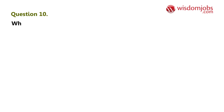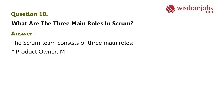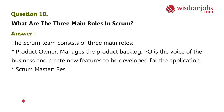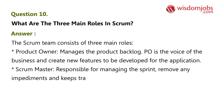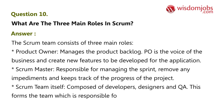Question 10: What are the three main roles in Scrum? Answer: The scrum team consists of three main roles: the Product Owner, who manages the product backlog and is the voice of the business, creating new features to be developed; the Scrum Master, who is responsible for managing the sprint, removing impediments, and tracking progress; and the Scrum Team itself, composed of developers, designers, and others, responsible for delivering high-quality software.